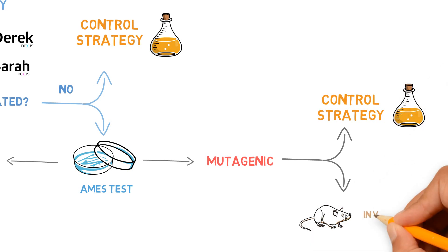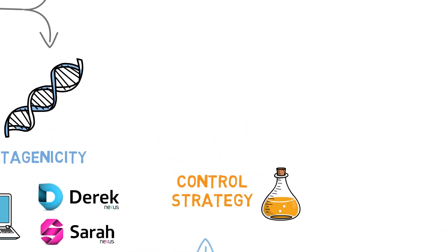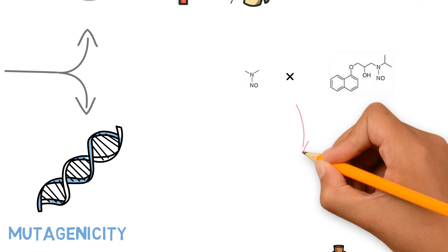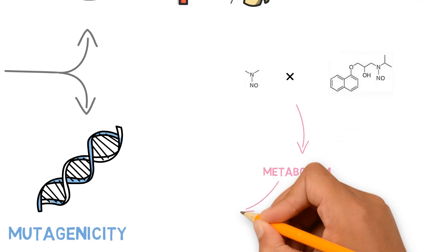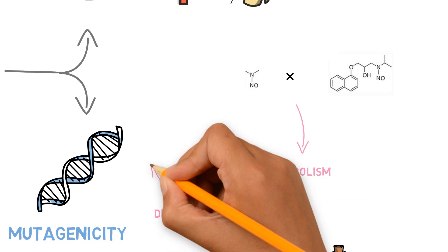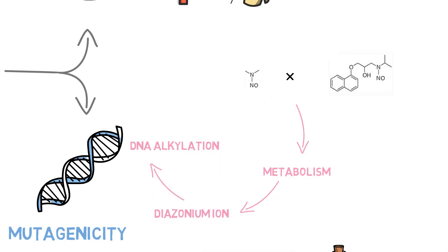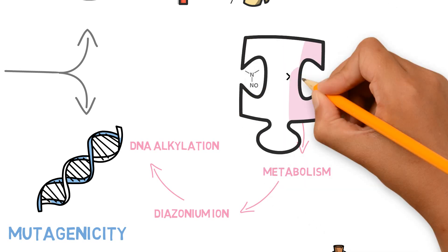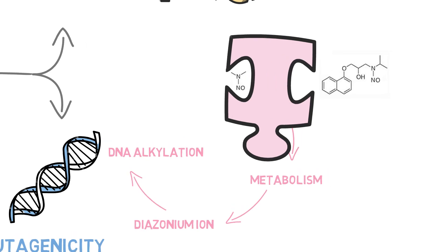There is a high probability that complex nitrosamines behave differently when compared to small nitrosamines. For a nitrosamine to be mutagenic, it generally needs to be metabolized to generate the diazonium ion, which then alkylates the DNA, potentially leading to mutations. But for this to happen, the nitrosamine needs to fit into the enzyme cavity that will metabolize it.